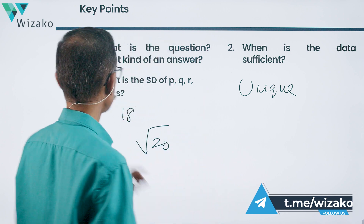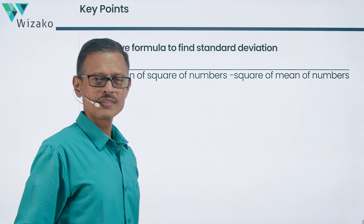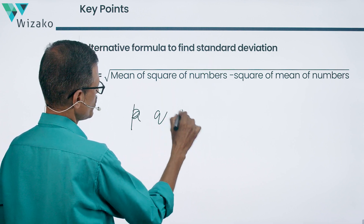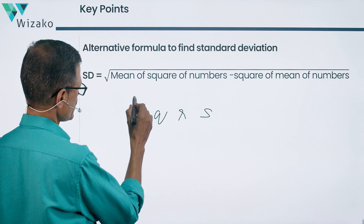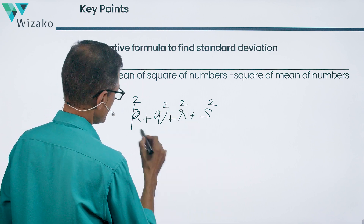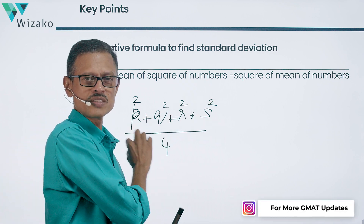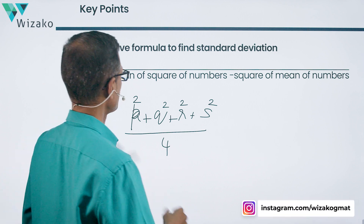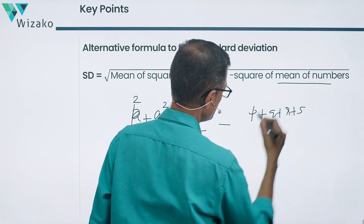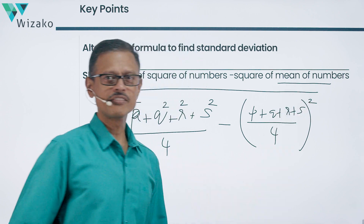The same thing has been distilled into a formula. Standard deviation equals the square root of: the mean of the squares of the numbers — that is, P² + Q² + R² + S² divided by four — minus the square of the mean of the numbers, which is (P + Q + R + S) divided by four, squared. The square root of this expression gives us the standard deviation.